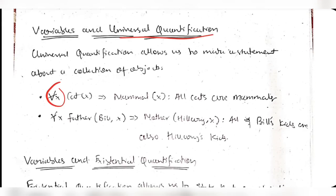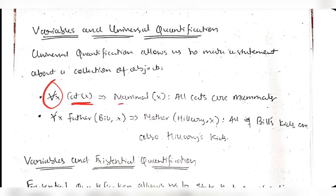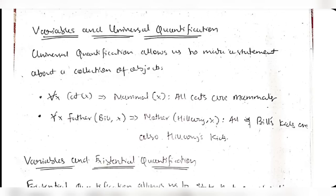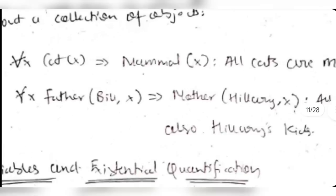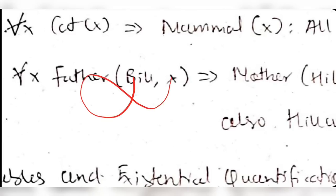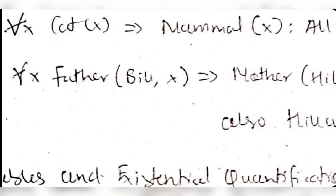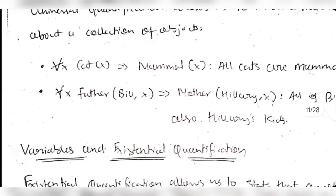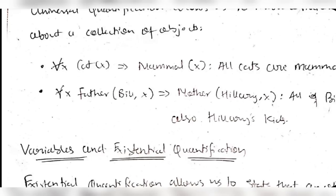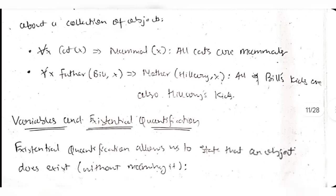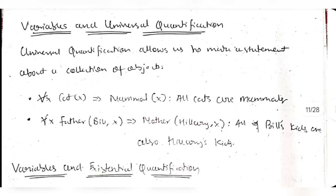Universal quantification example: 'All cats are mammals' is represented as ∀x cat(x) → mammal(x), meaning for all x, if x is a cat then x is a mammal. Another example: ∀x father(bill, x) → mother(hillary, x) - for all x, if Bill is the father of x then Hillary is the mother of x. These are the parents of x.